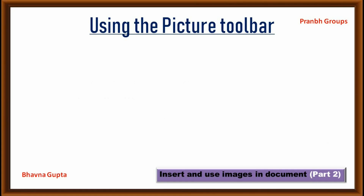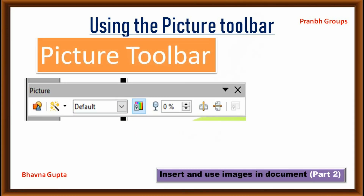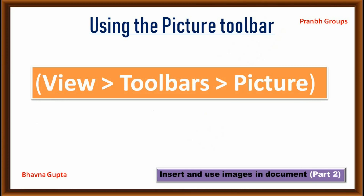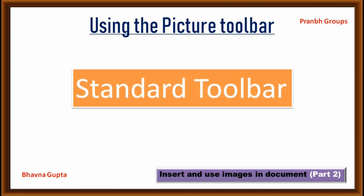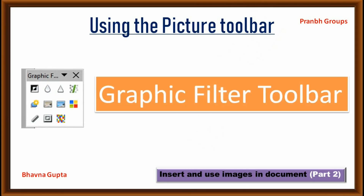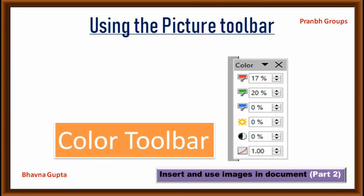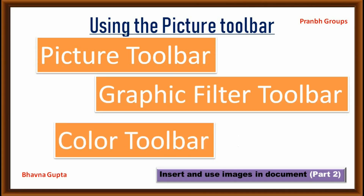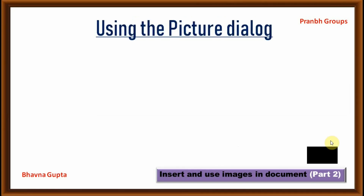When you insert an image or select one already present in a document, the picture toolbar appears. You can set it to always be present — follow these steps. Picture control buttons from the picture toolbar can also be added to the standard toolbar. Two other toolbars can be opened from this one: the graphic filter toolbar, which can be turned off and placed anywhere on the window, and the color toolbar, which opens as a separate floating toolbar. From these three toolbars, you can apply small corrections to the graphic or obtain special effects.